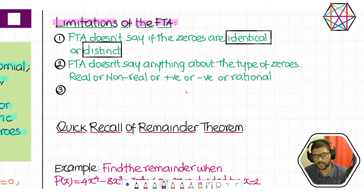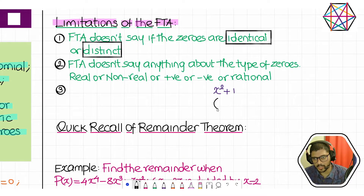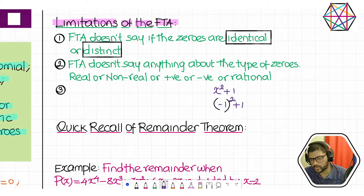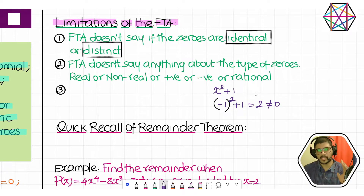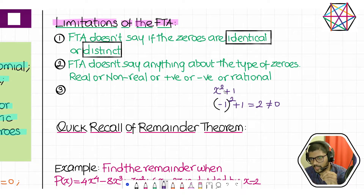Think about x squared plus 1. What kind of polynomial is this? It's a quadratic polynomial. Can you give me a zero of this? If you try minus 1: square of minus 1 is 1, plus 1 is 2. That doesn't give zero. You give me any real number — you will never be able to find one that makes this zero.